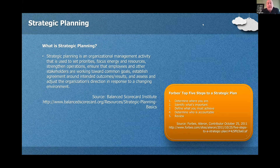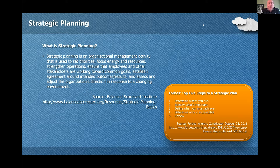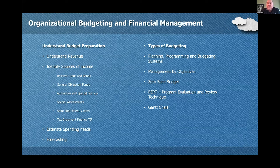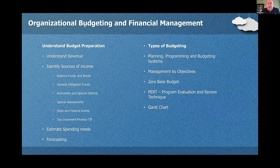Strategic planning is very important, especially for new managers coming into an organization, during a change of leadership, or tied to your annual budget. A strategic plan helps you identify goals and priorities for the upcoming year. Be familiar with budgeting and financial aspects of management — understanding revenue, sources of income, and forecasting. Know the different budgeting types: PPBS (Planning Programming and Budgeting Systems), management by objectives, zero-based budgeting where the budget starts from zero each year, PERT (Program Evaluation and Review Technique), and Gantt charts.